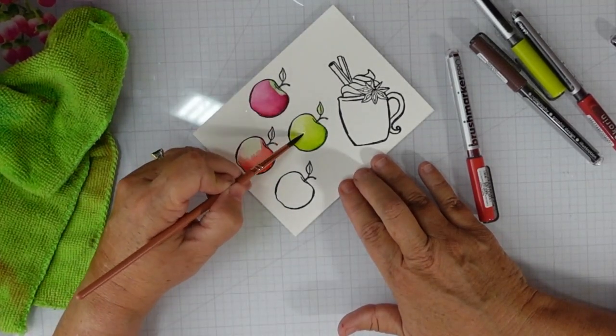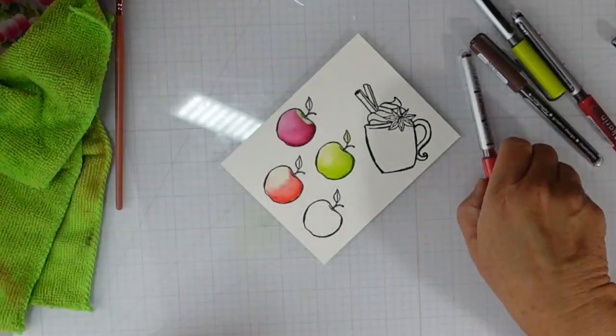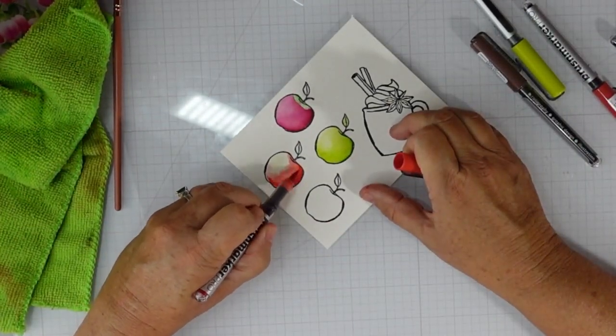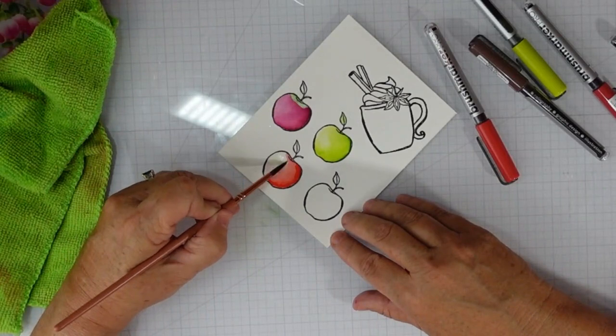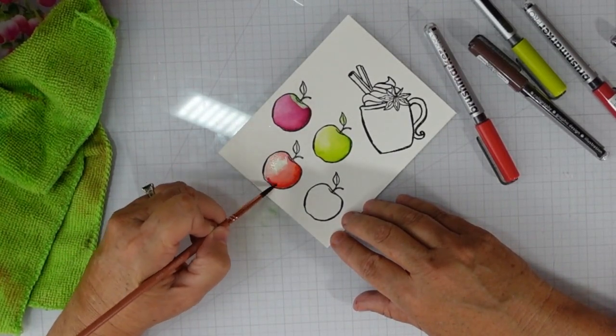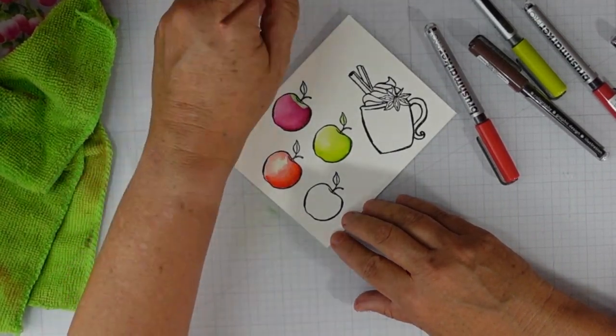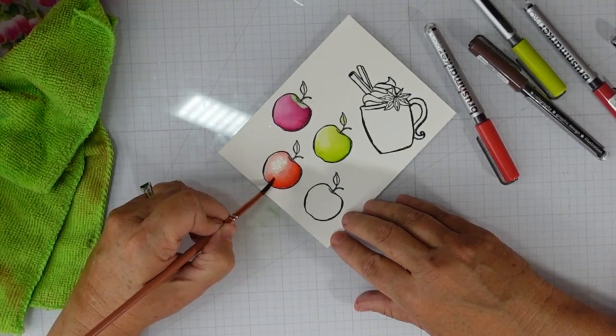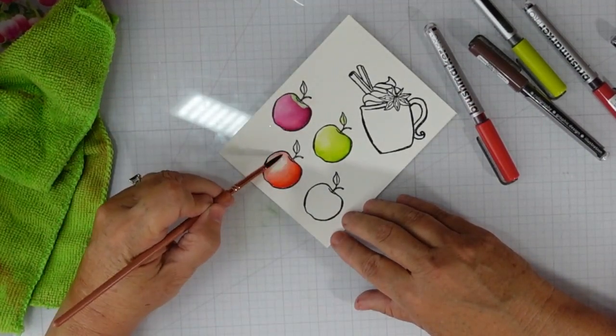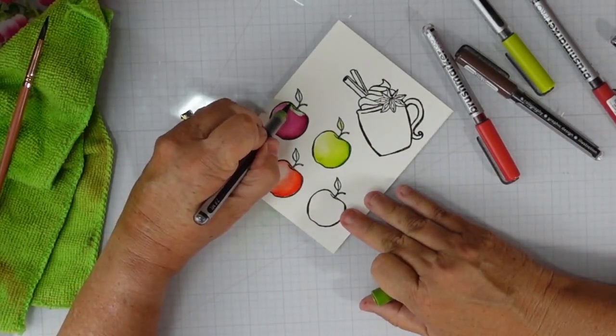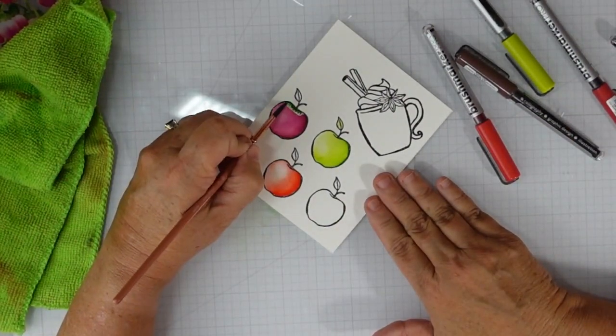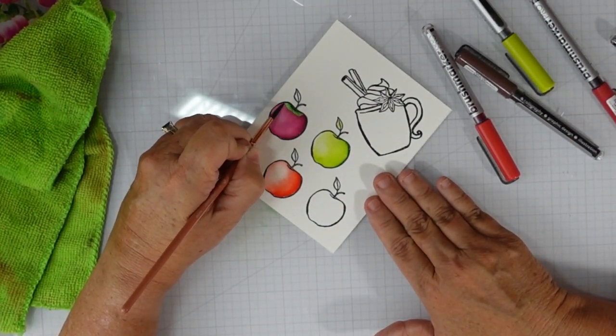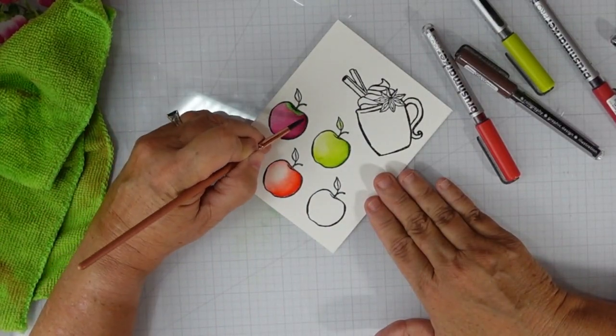I do use my Brother Scan and Cut to cut my images out. I'm going to color up an apple pie and also that apple cider cup. Those are going to be all of my apple products for my card.